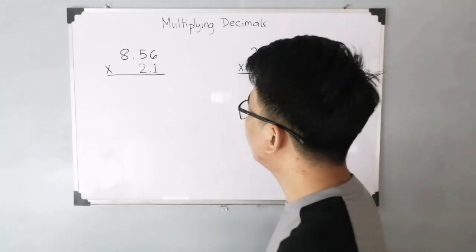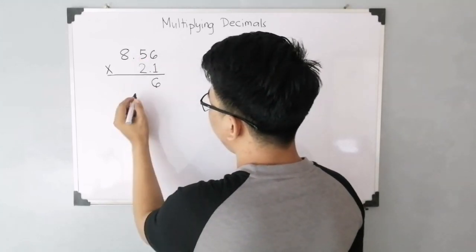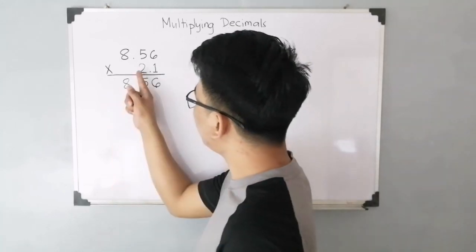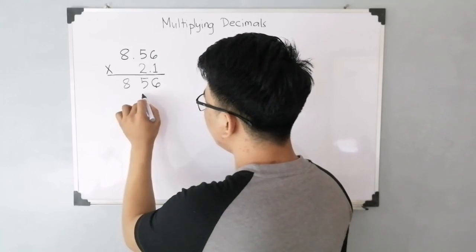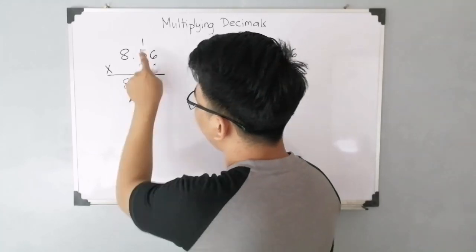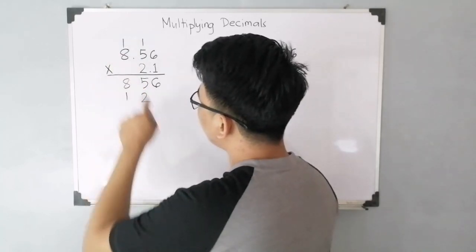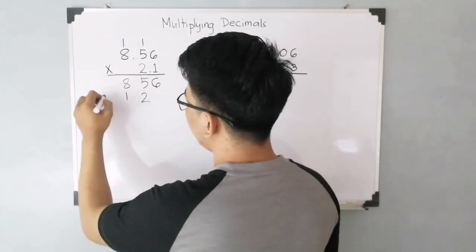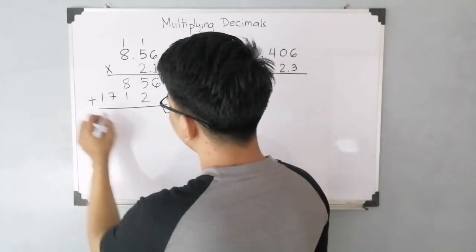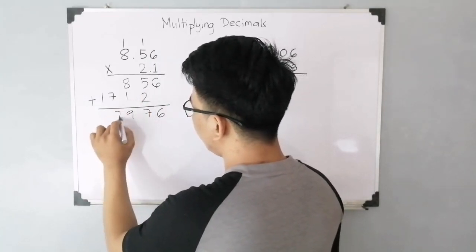Okay. Let us continue multiplying. So, first, multiply 1 by 6. That is 6. And then, 1 times 5. That will give you 5. And 1 times 8. That is 8. Now, the 2. 2 times 6. That is 12. So, 2 carry 1. And then, 2 times 5. That will give you 10. Plus 1. That is 11. So, 1 and carry 1. 2 times 8. That will give you 16. Plus 1. That is 17. And then, we need to add these numbers. This is 6. 5 plus 2. 7. 8 plus 1. 9. 7. And 1.